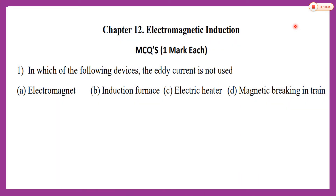The first MCQ given for this chapter is: in which of the following devices is eddy current NOT used? The options are: a) electromagnet, b) induction furnace, c) electric heater, and d) magnetic braking in the train.